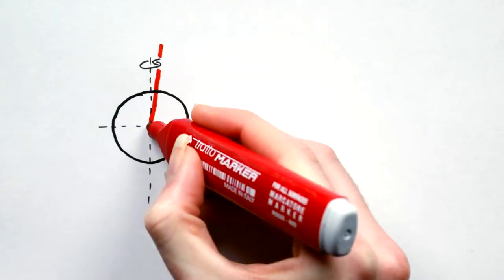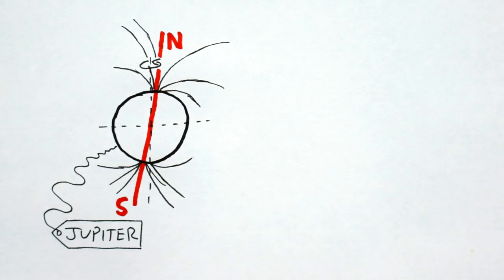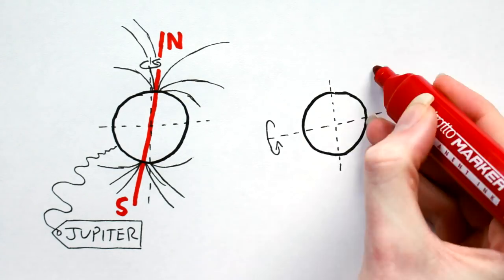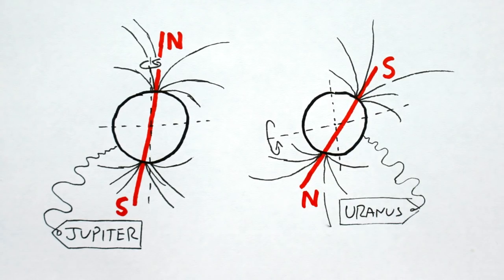But the most glaring difference here is that Jupiter and Saturn's magnetic fields are quite regular in nature. Uranus and Neptune's, on the other hand, are not. Theirs do not originate from their geometric centers and are sharply inclined to their axis of rotation. Why? Internal structure.